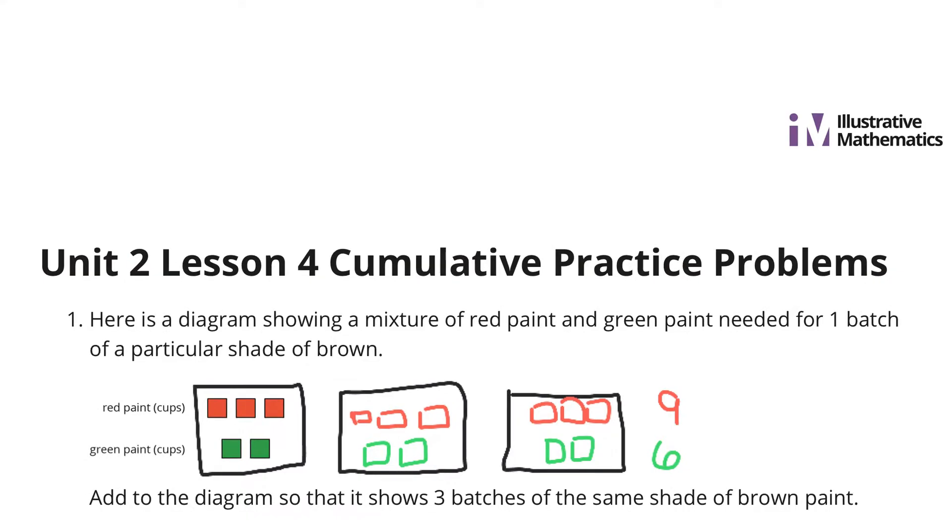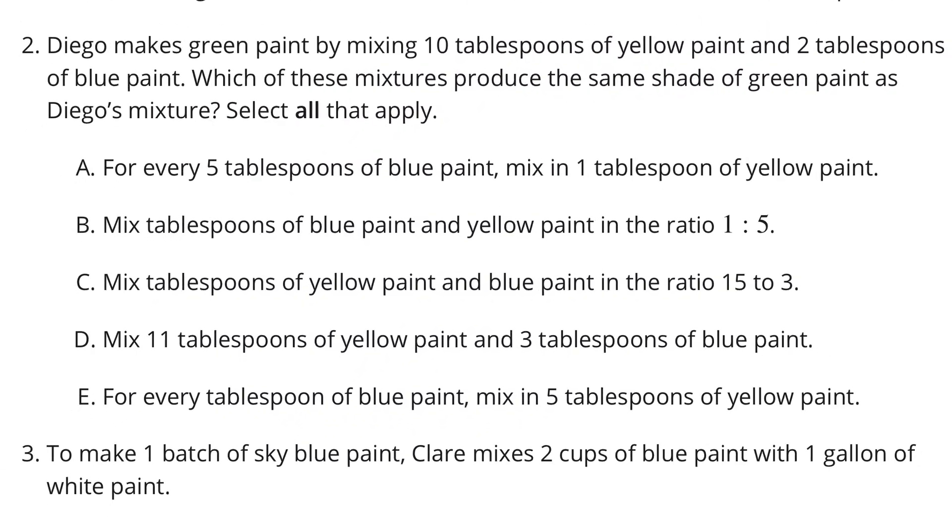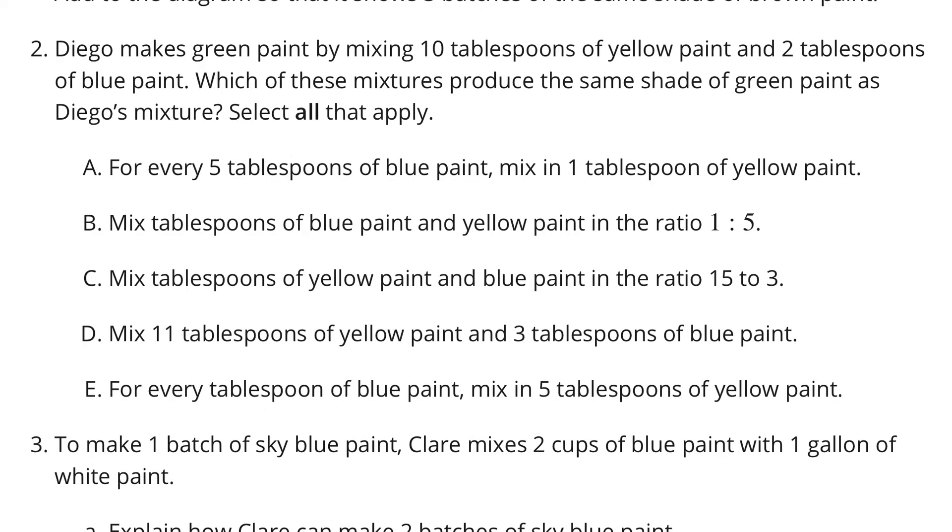As we move on to question two, Diego makes green paint by mixing 10 tablespoons of yellow paint and two tablespoons of blue paint. Which of these mixtures produce the same shade of green paint as Diego's mixture? Select all that apply. Let's just quickly do a diagram of what we have for this green paint.